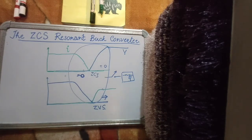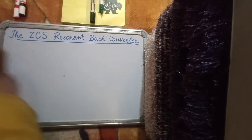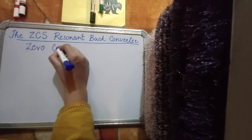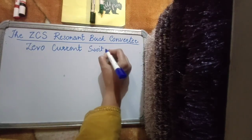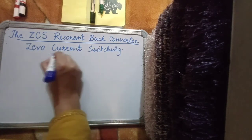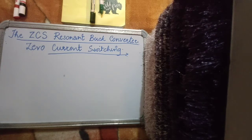Today we will start with the first resonant buck converter and the first type of resonant converter. We will start with zero current switching techniques — a technique in which the current first becomes zero and then the voltage rises, so we are talking about turn off. Sometimes when we study ZVS, ZCS and ZVS can coexist, giving minimization of both turn on and turn off losses. We'll begin with ZCS and start with the ZCS resonant buck converter.